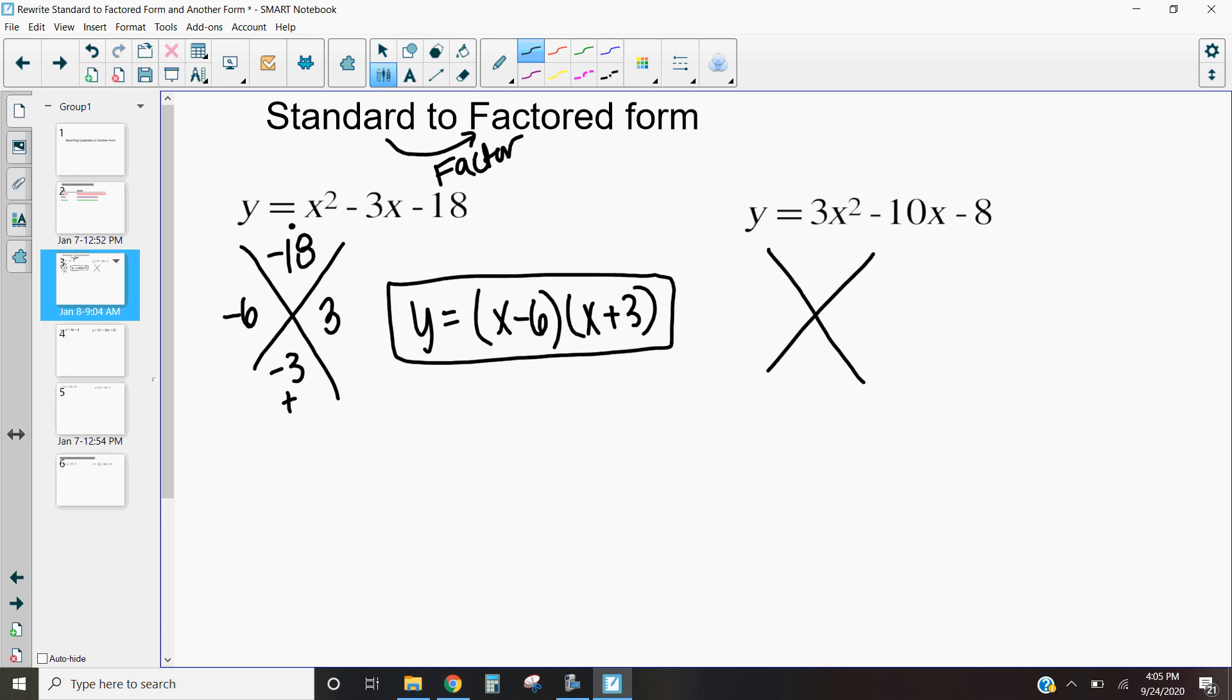So I'm going to use my x method. I'm going to multiply these. I get negative 24. So I want two numbers that multiply to negative 24 and add to a negative 10. And I'm going to rack my brain, try to figure out those numbers, and I come up with a negative 12 and a 2. Negative 12 times 2 equals negative 24. And negative 12 plus 2 equals negative 10.